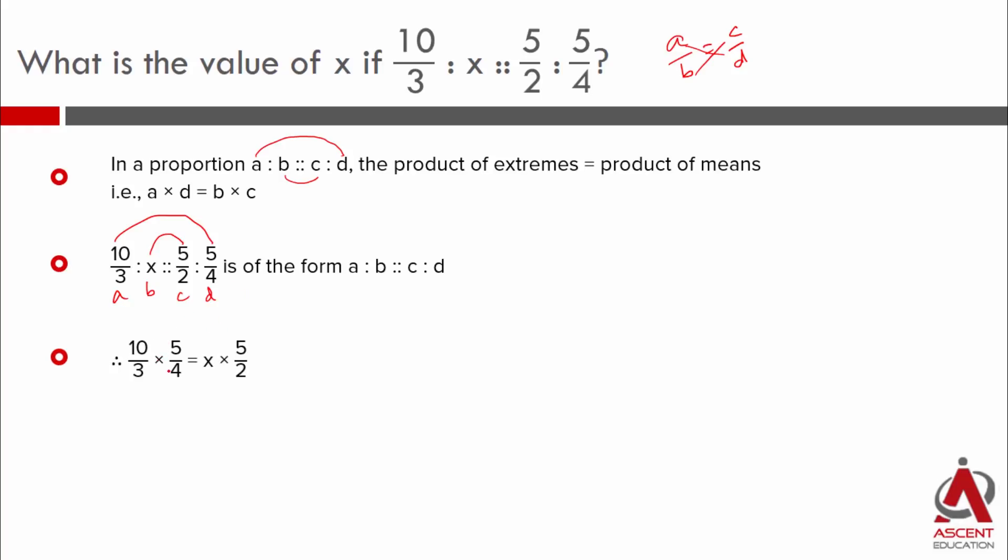A into d, 10 by 3 into 5 by 4 equals b into c, where b is x and c is 5 by 2. To find x, let us divide by 5 by 2. So, 10 by 3 into 5 by 4 divided by 5 by 2.